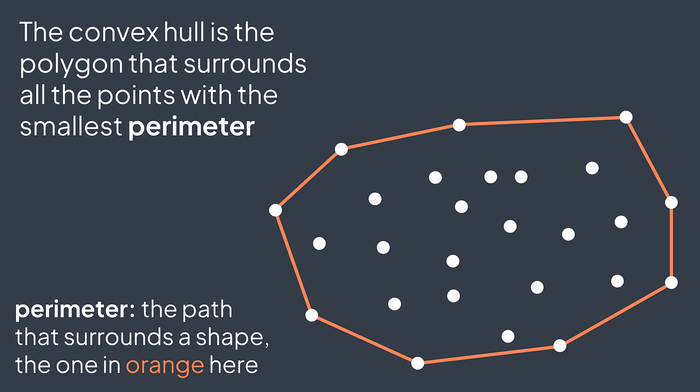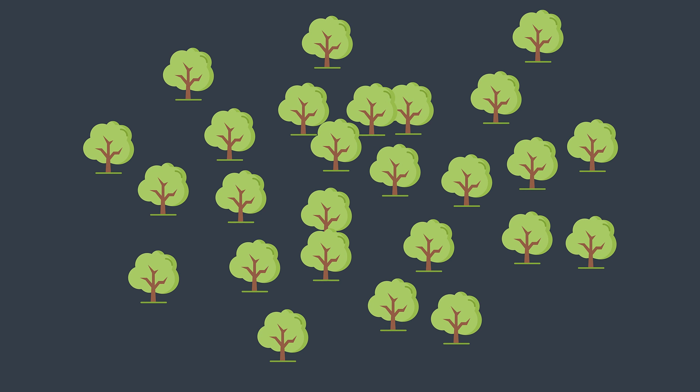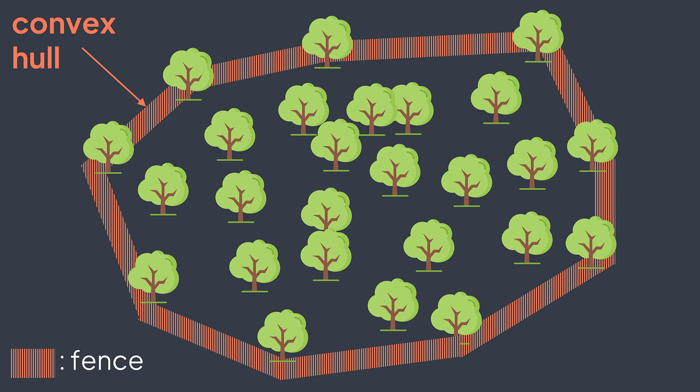This is why for example, if we want to surround a set of trees by minimizing the length of fence used, we calculate the convex hull as the polygon that can surround all the trees by using as little fence as possible.